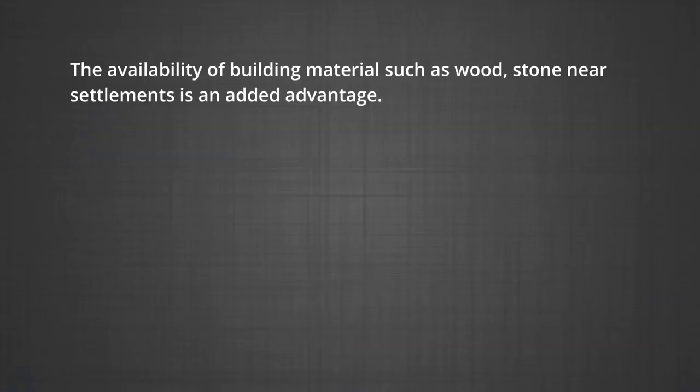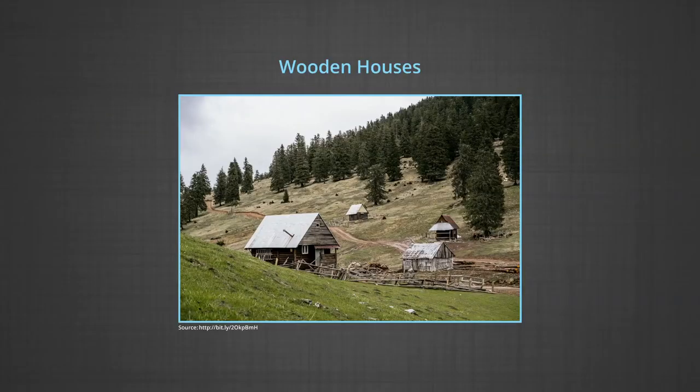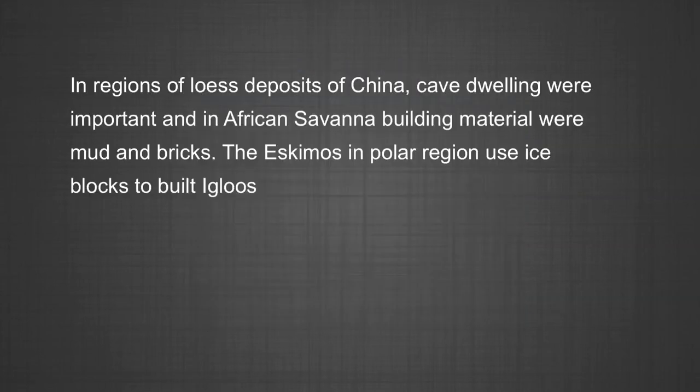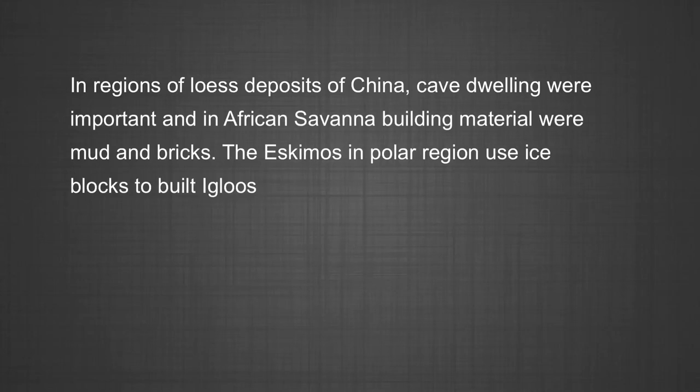Building material is an important factor which influences the setting of rural settlements. The availability of building materials such as wood and stone near settlements is an added advantage. Due to availability of wood, early villages were built in forests. In regions of loess deposits in China, cave dwellings were important, and in the African savannah, building materials were mud and bricks. The Eskimos in polar regions use ice blocks to build igloos. These variations in house types are mainly based on the building materials available in the region.